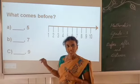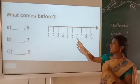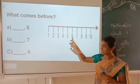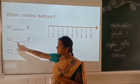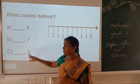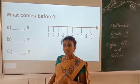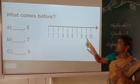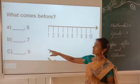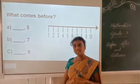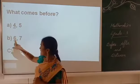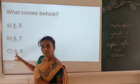Shall we find the number 7? Here is number 7 — which number comes before 7? Yes, 6. So 6 is the before number of 7. What comes before 9? Here is number 9 — 8 is the before number of 9. Let's check our answers: 4 comes before 5, 6 comes before 7, 8 comes before 9.